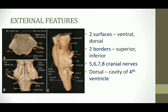The external features of pons include two surfaces, the ventral and the dorsal, and two borders, the superior and the inferior. Cranial nerves 5, 6, 7, and 8 arise from the pons on the ventral lateral aspect. Posteriorly, the pons has the cavity for the fourth ventricle.